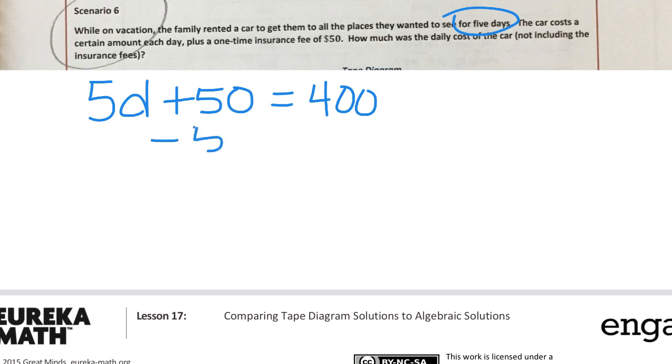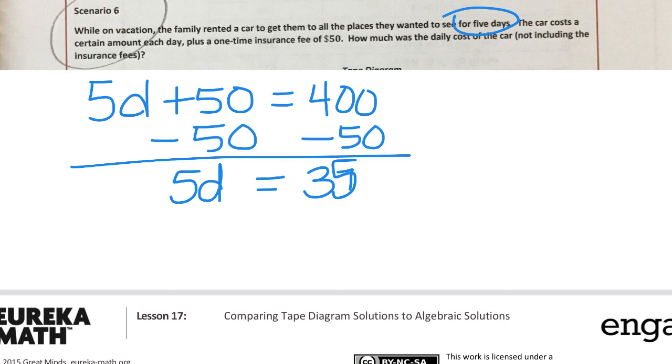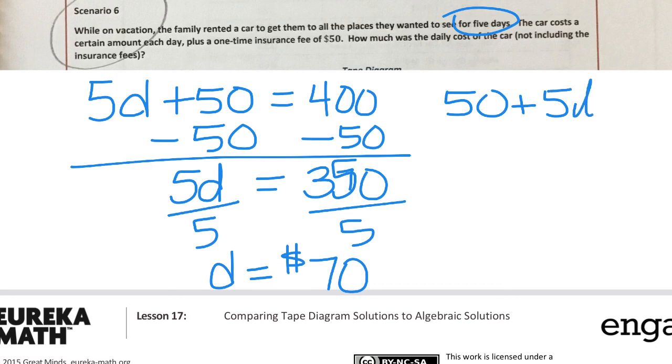So the first thing I'm going to do is subtract the 50 off. And when I do that, I get five times D equals 350. Now I'm going to divide both sides by five. And so the daily cost of renting the car is $70. So they were paying $70 a day to have the rental. And then they also had to pay the 50 for the insurance, but the daily cost was 70. When you are working on the problem set, one of the big things here is that you'd be able to set up the equations before you solve them. Now keep in mind in this particular one, if somebody wrote 50 plus 5D equals 400, that is the exact same expression or equation. So just keep that in mind when you are setting them up and checking.